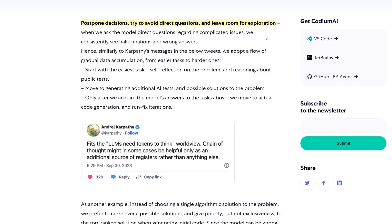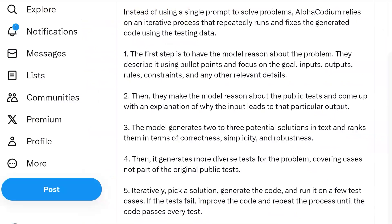Here's a great summary from Santiago on Twitter. First, AlphaCodeium gets the LLM - and it's model-agnostic - to reason about the problem, describe it using bullet points, and focus on the goal, inputs, outputs, rules, etc.